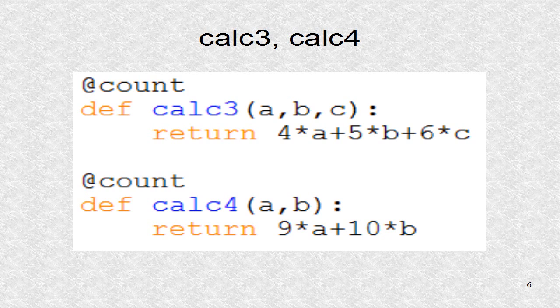The function calc3 and calc4, are also decorated. In calc4, we only have two parameters. The other three calc functions have three parameters. The outer function in count is done at function definitions, and counters should have been set to 0 for all these four functions.